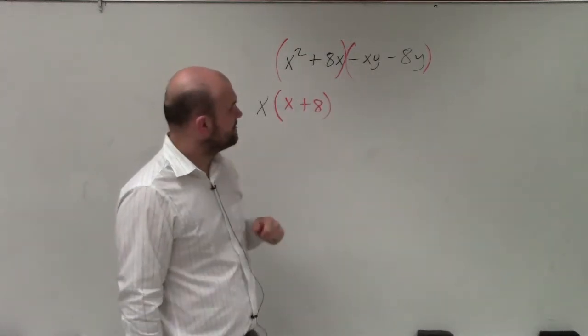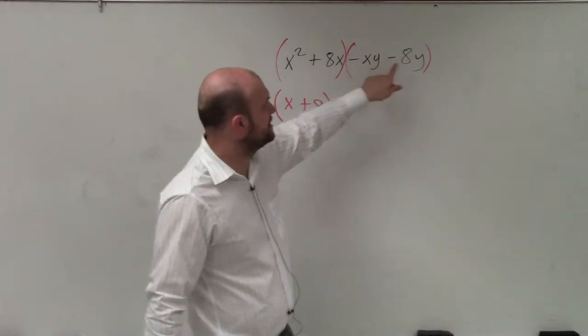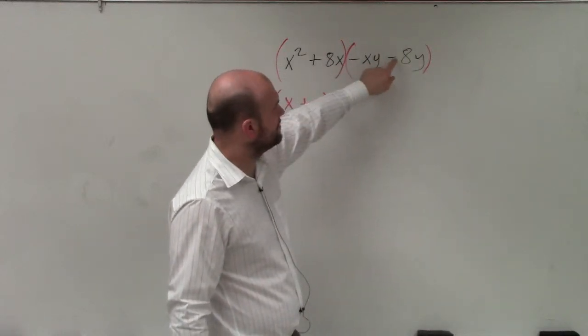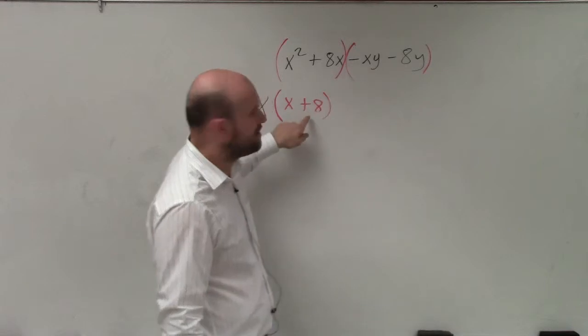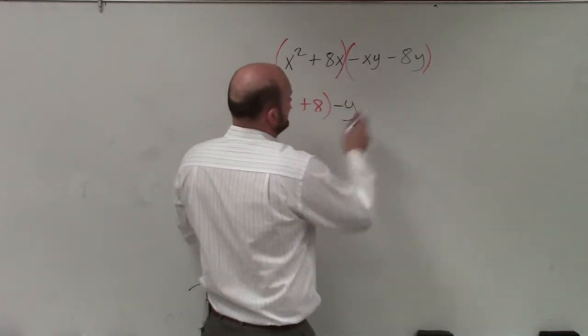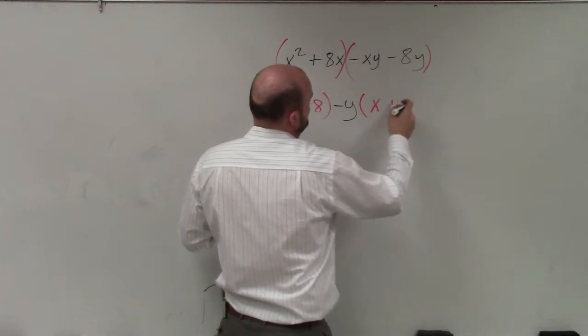Then over here, if I look to factor this, you can see that they both share a y. And I'm going to want to factor out a negative y, because I'm going to want to make this negative 8 to be positive like this one. So I'm going to factor out a negative y. And when I factor out a negative y, I'm left with an x plus 8.